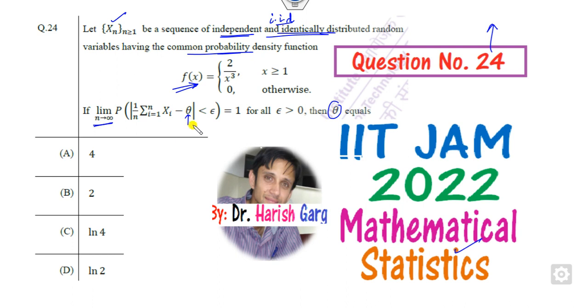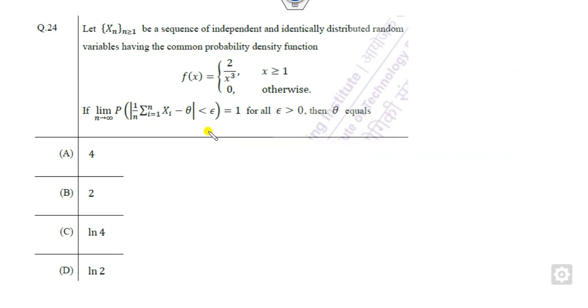That is very simple. If you remember, which concept is used here to describe this question? Yes, this is nothing but convergence in probability. That is a simple concept behind that. So what is the meaning of that once it is convergence in probability?